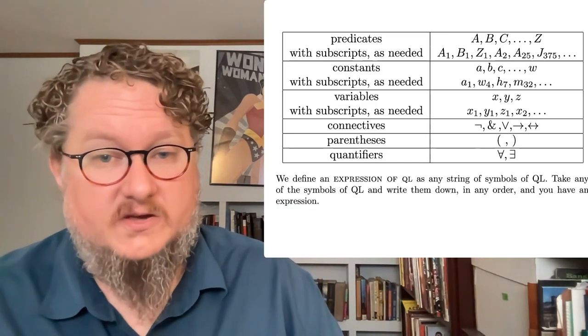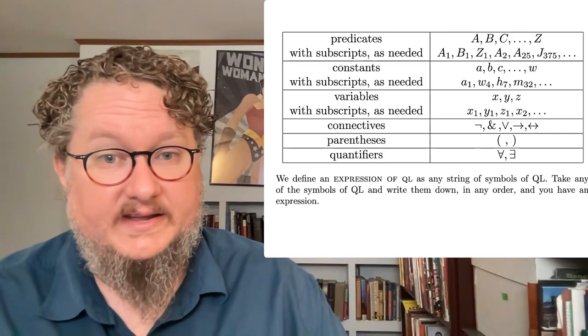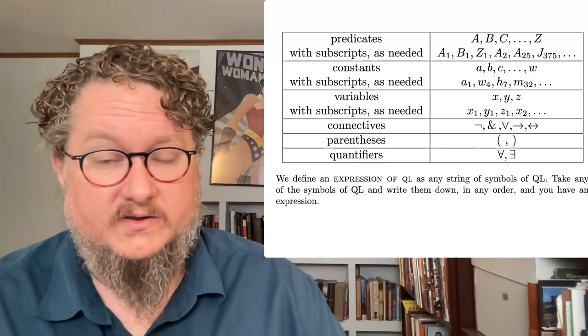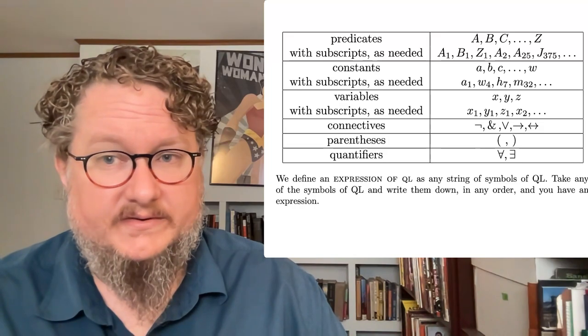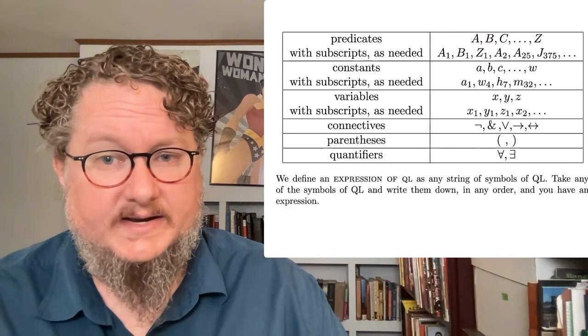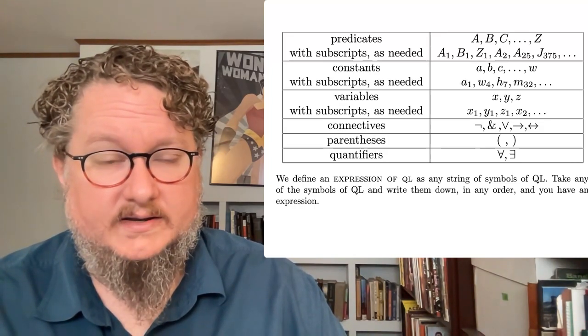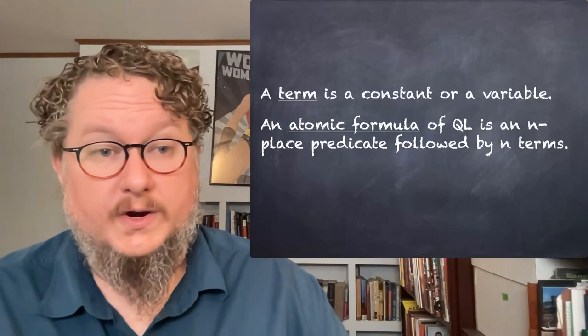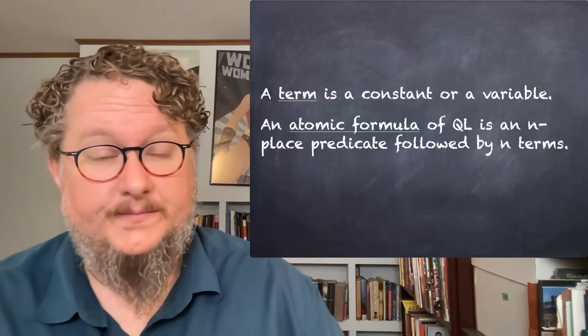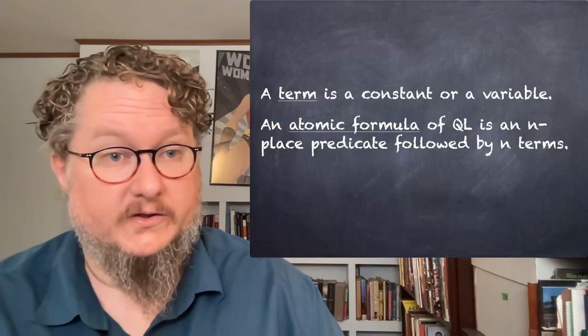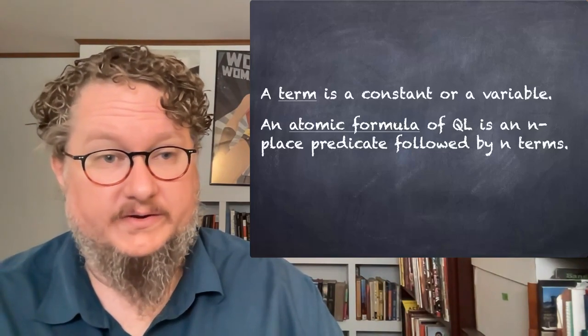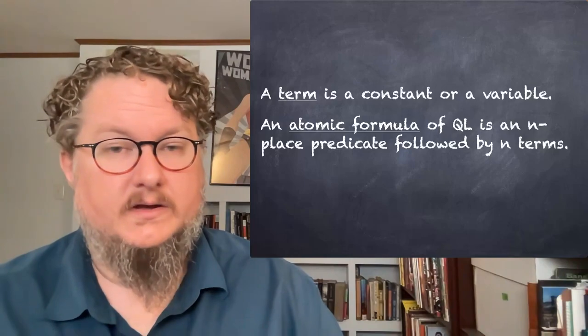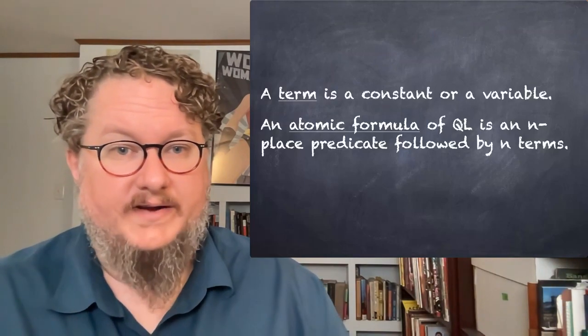We're going to define an expression of QL, as we did with SL, as any string of symbols of QL. Take any of the symbols of QL and write them down in any order, and you have an expression of QL. We're going to define a term of QL as any constant, singular term, or variable. So we'll use the generic term to refer to either constant or variable.